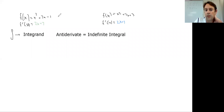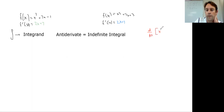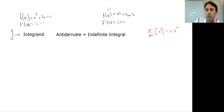What we end up doing with the integrand is it goes and undoes a derivative. On those two derivatives we just looked at, we used the power rule. A quick reminder: the power rule takes the original exponent, multiplies it down, and subtracts one from the exponent. An indefinite integral or antiderivative does the exact opposite.